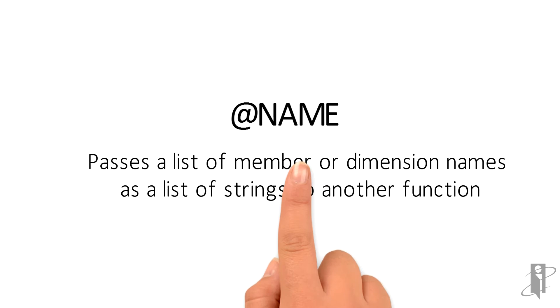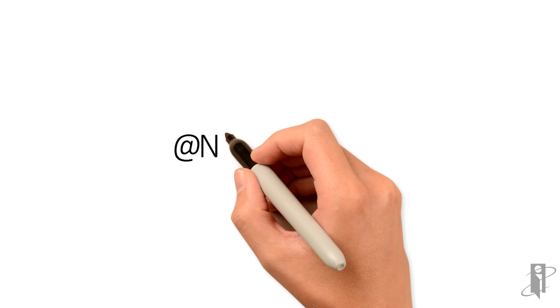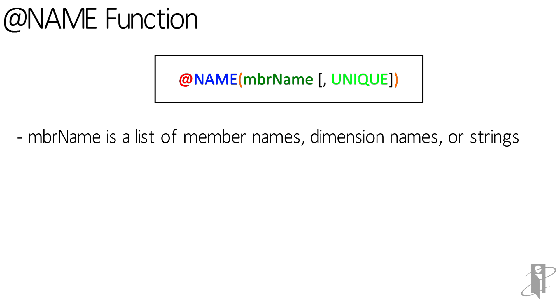The NAME function passes a list of member or dimension names as a list of strings to another function. To use the NAME function, we use @NAME in parentheses with a member name variable and an optional UNIQUE keyword. The member name could be a list of member names, dimension names, or strings.